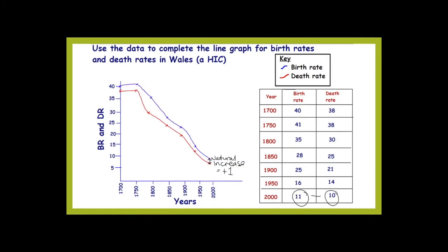You should have ended up with a graph that looks something like this. The birth rate and the death rate over time both steadily decline roughly in line with each other, so you don't really have a massive gap between them — the natural increase is quite small. Population growth in HICs like Wales is fairly steady. Some countries, like Denmark and Italy, are even starting to enter a period where their birth rate drops below their death rate, so their population is actually starting to decline very slightly. The natural increase is just plus one extra person per thousand people in the population. Make sure it's titled something like 'A graph to show changes in birth rate and death rate in Wales over time' with axes labelled.